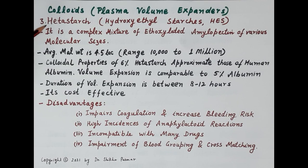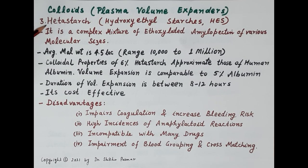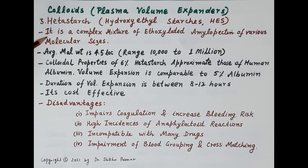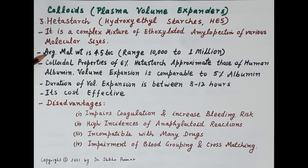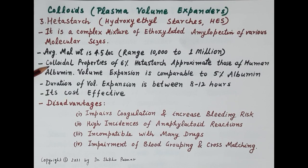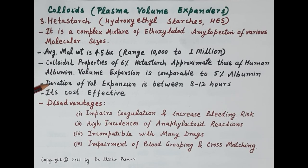The next artificial colloid is hetastarch — hydroxyethyl starches, abbreviated HES. Hydroxyethyl starches are derivatives of amylopectin, a highly branched compound of starch. Hetastarch is a complex mixture of ethoxylated amylopectin of various molecular sizes, with an average molecular weight of 4.5 lakh and a range between 10,000 to 1 million. The colloidal properties of 6 percent hetastarch are similar to those of human albumin, and volume expansion is comparable to 5 percent albumin, with a duration of 8 to 12 hours.